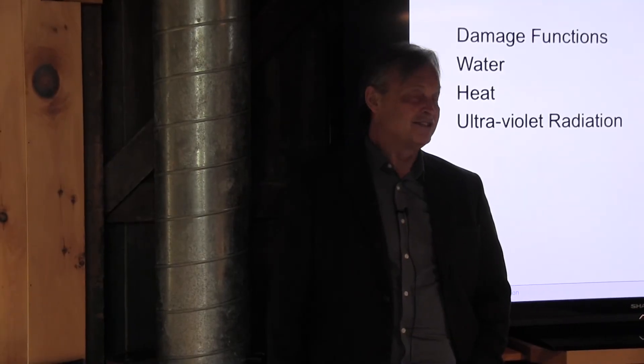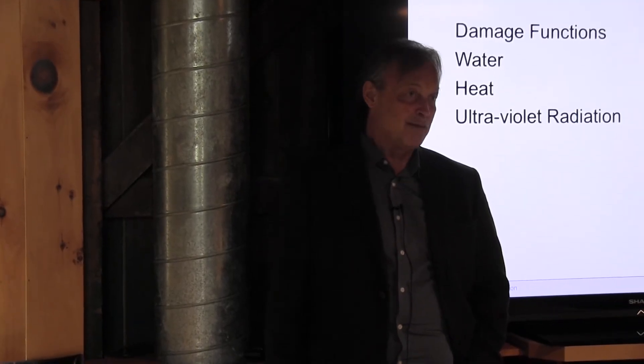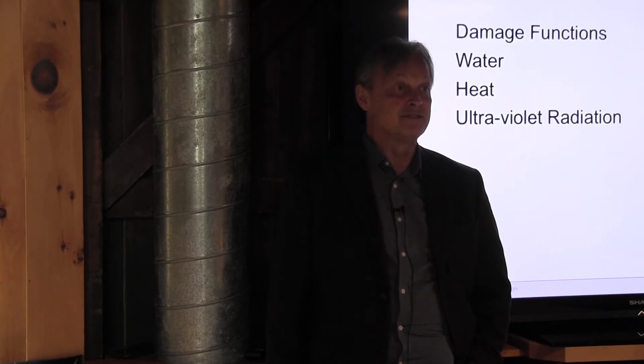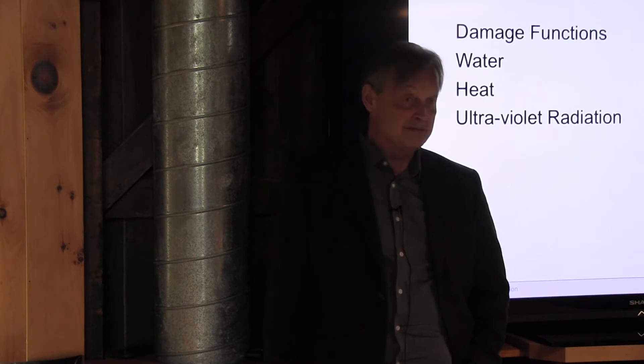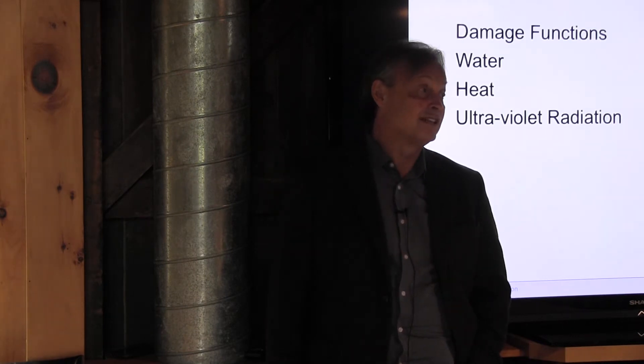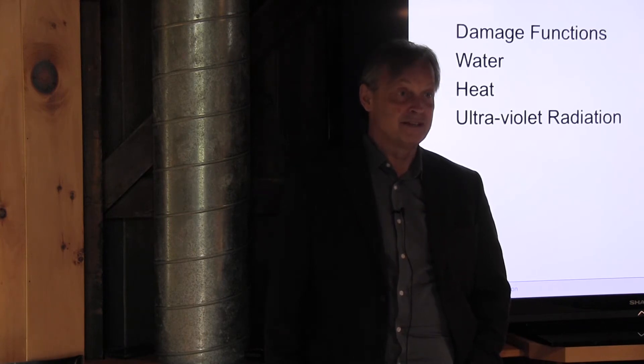So the complexity of the sides means we have more problems on the sides than we typically have with the roof and the ground. Even though the load is greater on the roof and the ground, we have complexity working against us where the building touches the sides. Everybody with me on that?